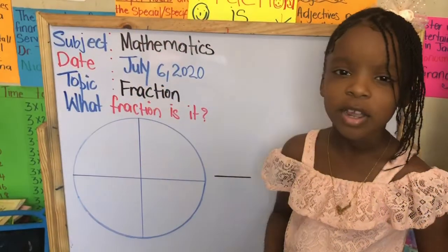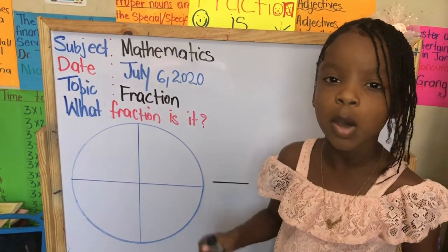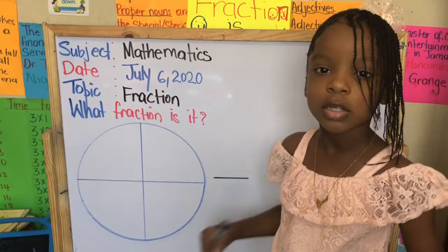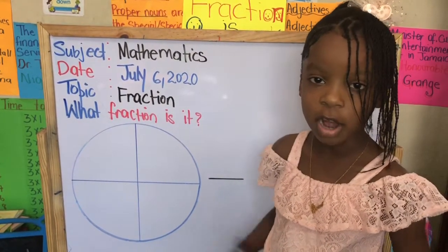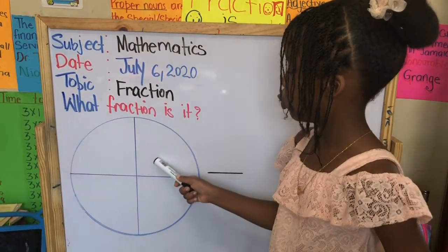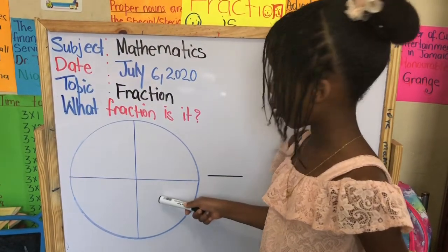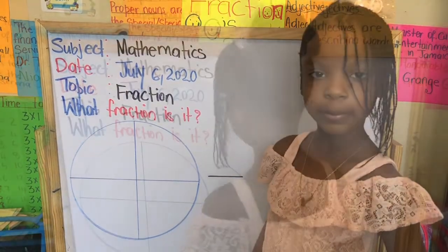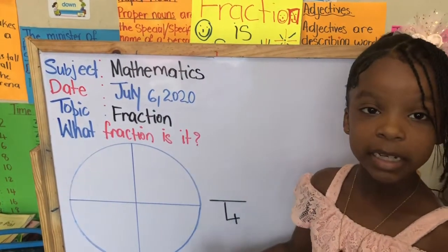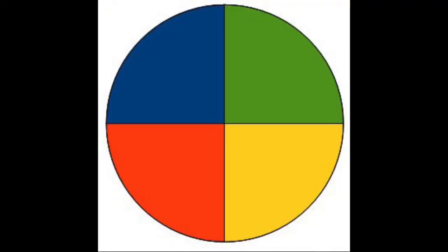Remember that the denominator tells the total amount of parts. Let us count to see how many parts there are: one, two, three, four. The number four is the denominator because there are four parts.